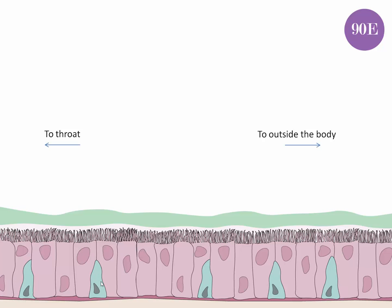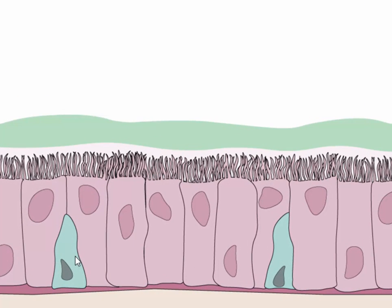These goblet cells function to produce something called mucus, or snot that you know of, and it does this by releasing it like a gland into the nose. This mucus is really important, because it traps all those tiny little bacteria and all those tiny little things that get through the nasal hairs.